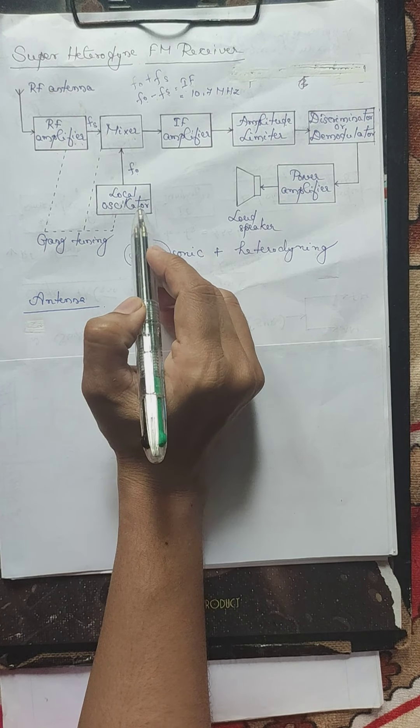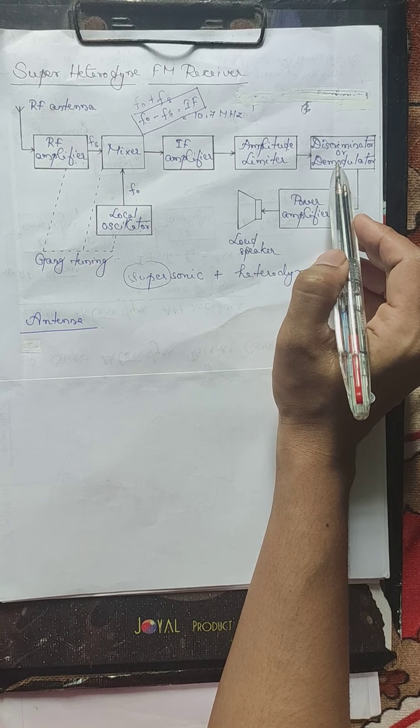The output of the amplitude limiter, which is a constant amplitude signal, is fed to the discriminator, also known as the demodulator. This block performs the demodulation function. We are sending a modulated carrier wave through space, and at the destination it must be demodulated — that is, we must extract the original information from the modulated signal. This block extracts the original information or the modulating signal from the modulated carrier wave.